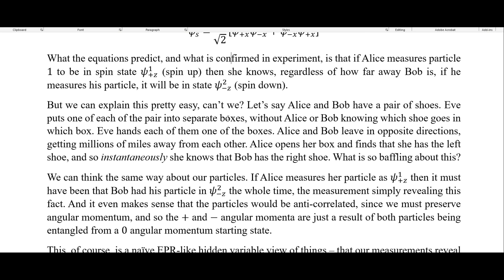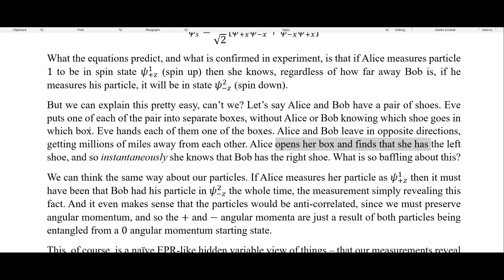But we can explain this pretty easily. Let's say Alice and Bob have a pair of shoes. Some third person, Eve, puts one of each pair into separate boxes without Alice or Bob knowing which shoe goes in which box. Eve then hands each of them one of the boxes. Alice and Bob leave in opposite directions, getting millions of miles away from each other. Alice then opens her box and finds that she has the left shoe, and so instantaneously she knows that Bob has the right shoe.